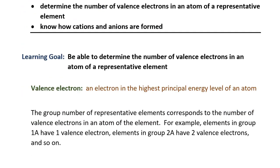Let's take some notes on that first learning goal: be able to determine the number of valence electrons in an atom for any representative element. The representative elements are the elements in columns 1A, 2A, 3A, 4A, 5A, 6A, and 7A. All of the elements in the center of the periodic table are the transition metals — those are not the representative elements. And the very last column, group 8A, is the noble gases.